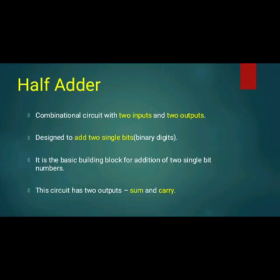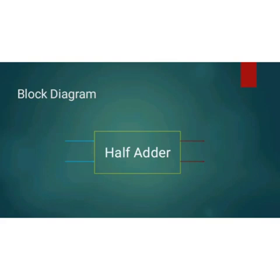The half adder circuit has two inputs and two outputs, and it is designed to add two single bits — binary digits, zero and one. It is the basic building block for addition of two single-bit numbers. This circuit has two outputs: sum and carry.